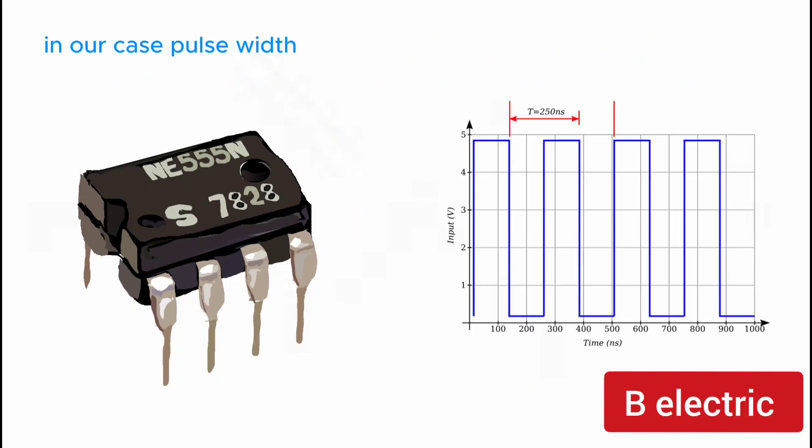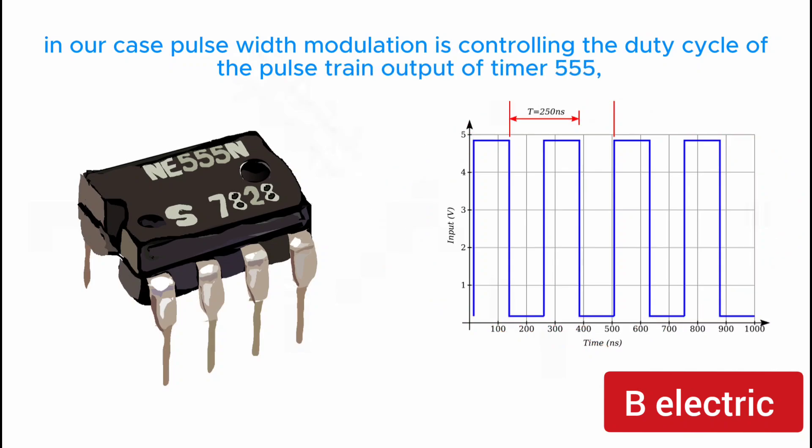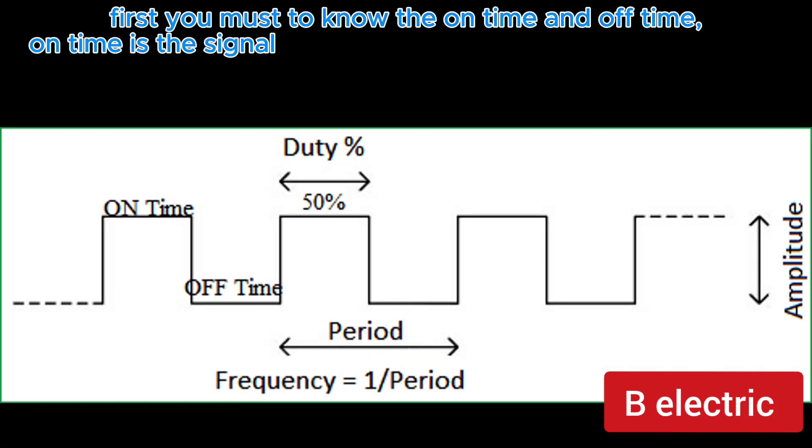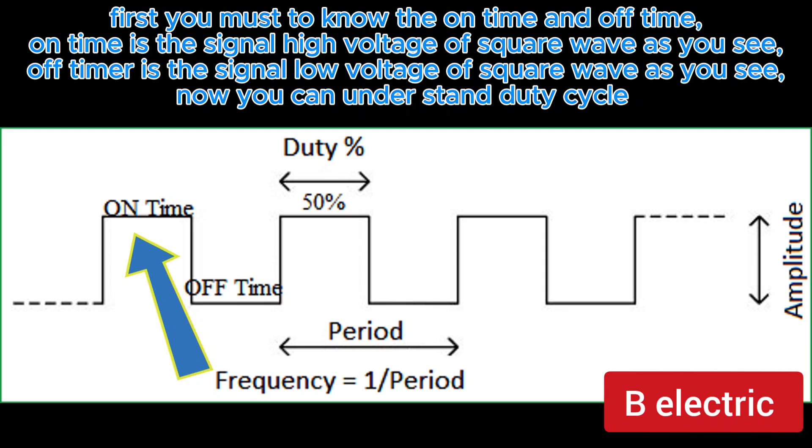In our case, Pulse Width Modulation is controlling the duty cycle of the pulse train output of timer 555. But what is the duty cycle? First you must know the on time and off time. On time is the signal high voltage of square wave as you see. Off time is the signal low voltage of square wave as you see.